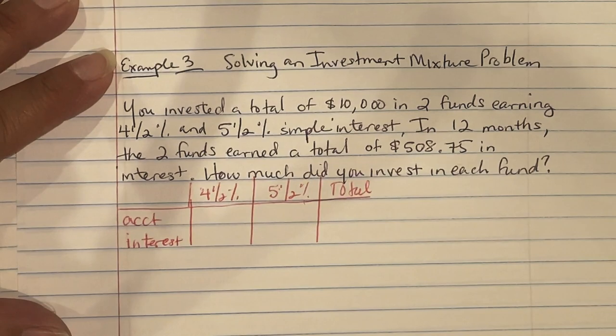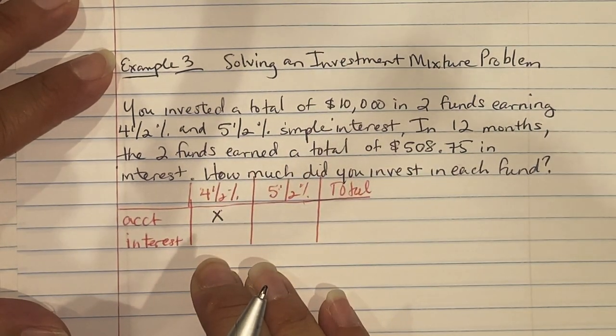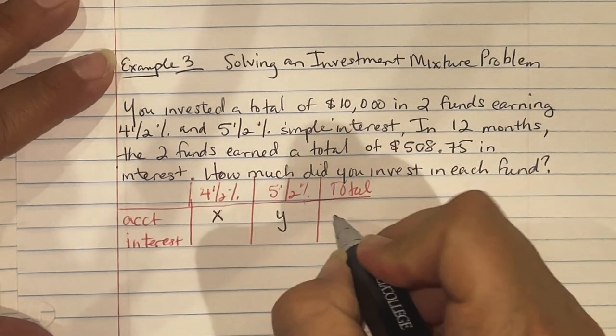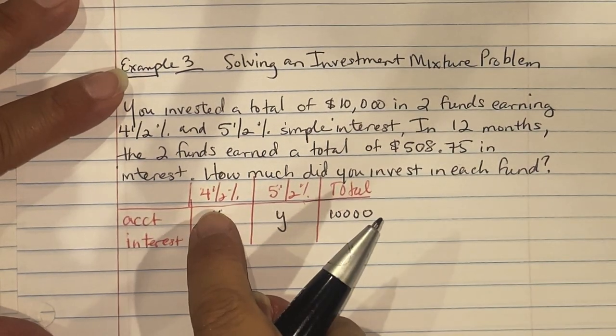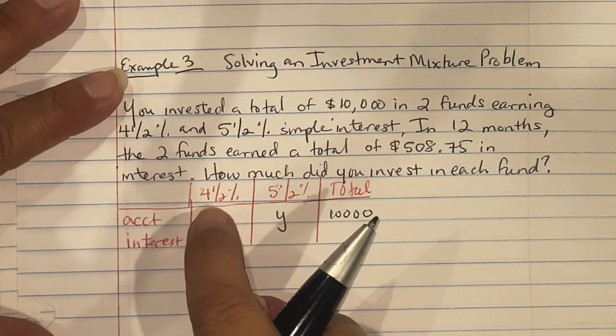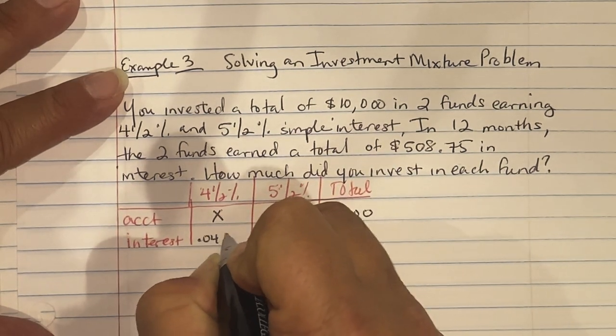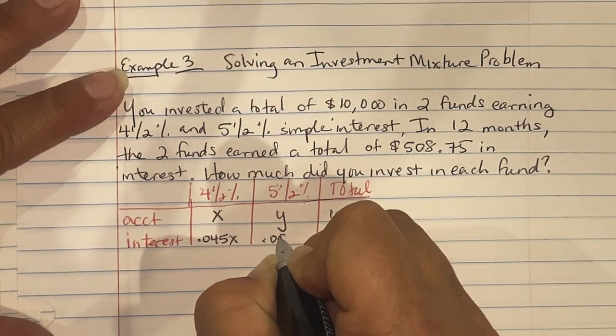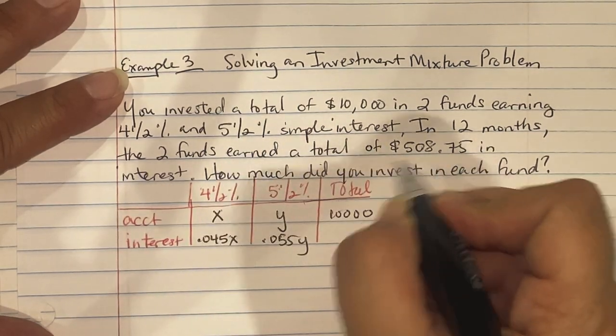So we don't know how much we have at the 4.5%, we don't know how much we have at the 5.5%. That's why I wrote X and Y. But they told us we had $10,000 to invest. Remember back from module 3, when we were doing systems of linear equations, we needed to convert these percentages into decimal points. So this is actually 0.045 with X, 0.055 with Y. And then they told you your total interest earned was $508.75.